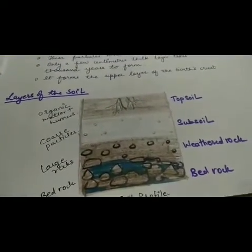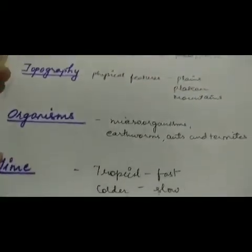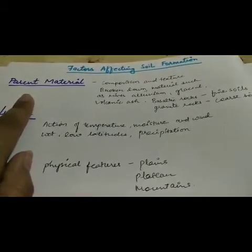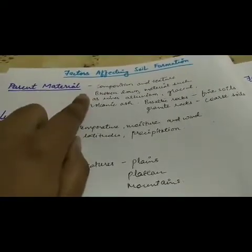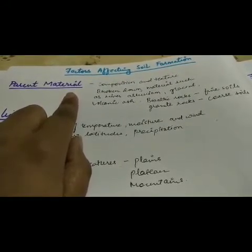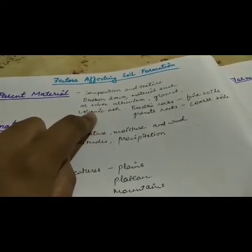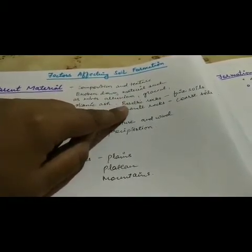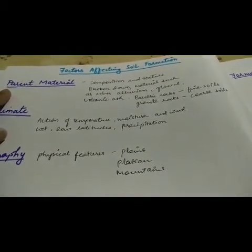We will now move to the next topic: factors affecting the formation of soil. These are parent material, climate, topography, organisms, and time. Parent material means the main rock from which soil is formed. Different soils are formed from different rocks, so the basic composition and texture of the soil depends upon the rock from which it is formed. Parent material may be rock broken down on the spot by weathering, or material such as river alluvium, glacial deposits, or volcanic ash. Soil formed from igneous and basaltic rocks is fine, while granite rocks give coarse soil.